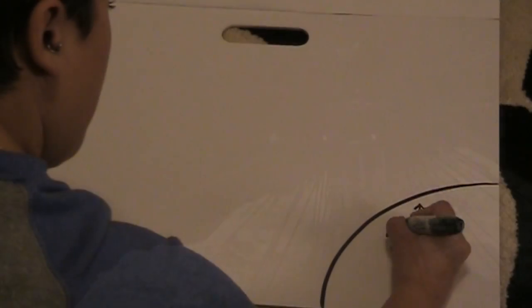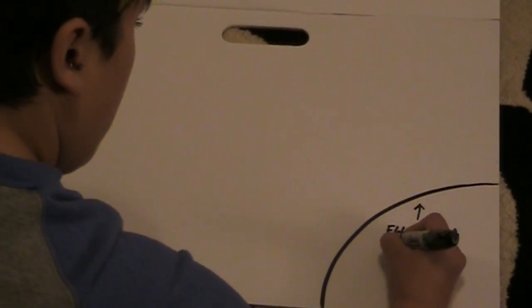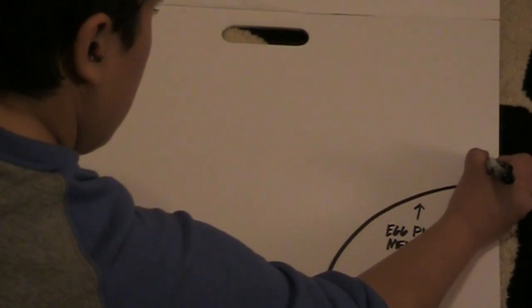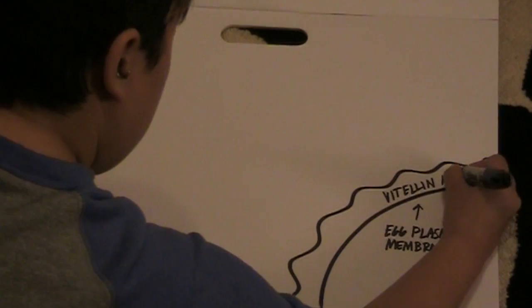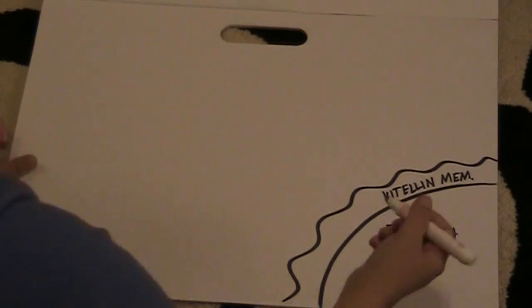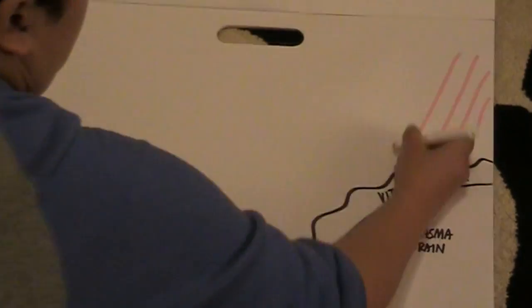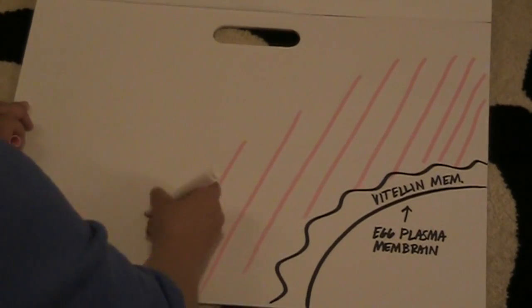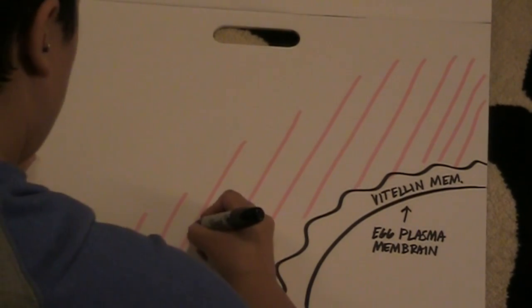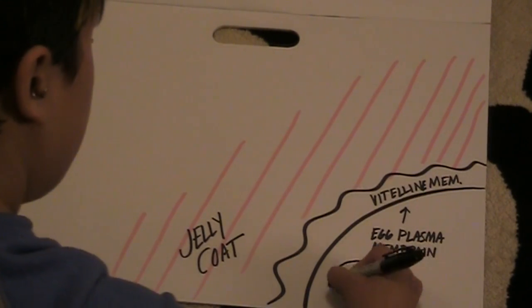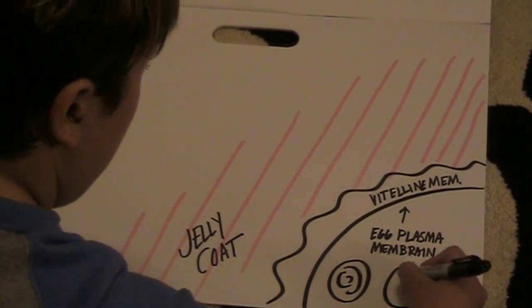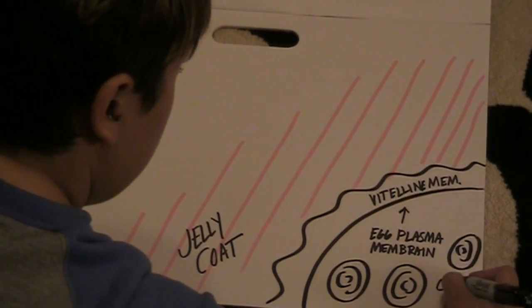It's important here to keep in mind the structures of both egg and sperm, because they will influence each other for the nuclei to meet and form the zygote. Inside, you have the egg plasma, a space, the vitelline membrane, and then the jelly coat. Within the egg plasma membrane, cortical granules are located. Very important.